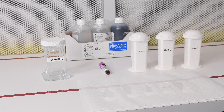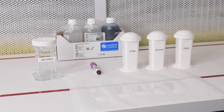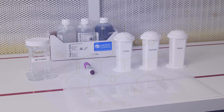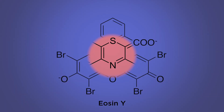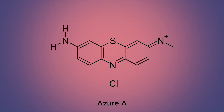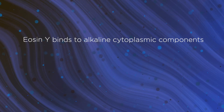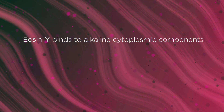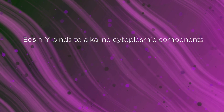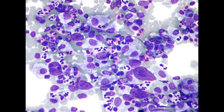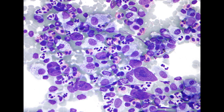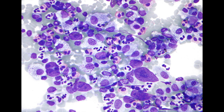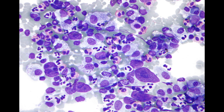The principle of Romanowski stains is that they are made up of oxidized methylene blue dyes and eosin Y. The azure dyes are basic and bind to acid nuclei, forming a blue to purple color. The acid dye eosin binds to alkaline cytoplasmic components, forming a red, orange, or pink colorization. Romanowski stains work principally in their ability to produce a variety of hues, making it possible to differentiate various cellular components.